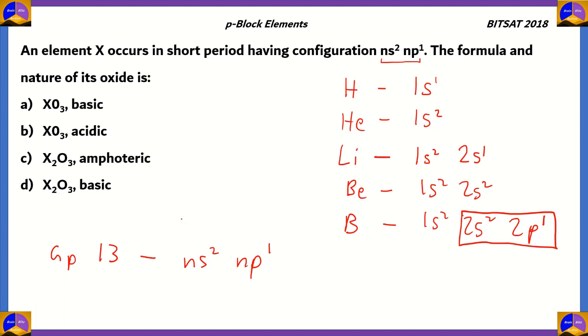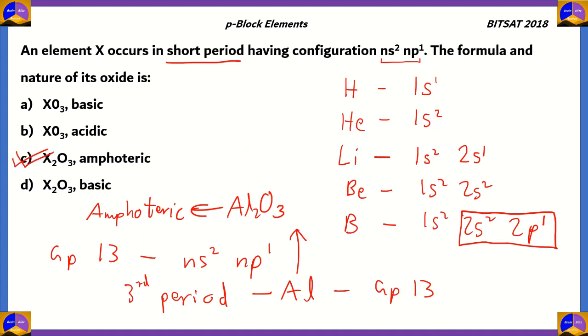Here we're looking at an element which occurs in a short period, and that period will be period 3, which contains aluminum in group 13. Aluminum's oxide is Al2O3, and this oxide is known to be amphoteric. That means it reacts with both acids as well as bases. Therefore, the correct option among the four will be option C, X2O3 amphoteric.